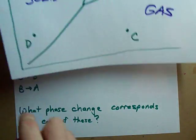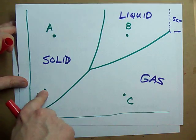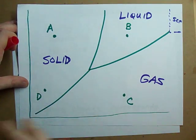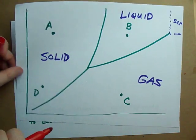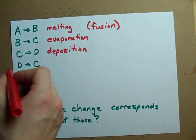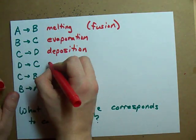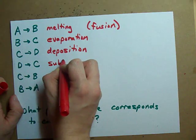D to C is when the solid turns straight into a gas with no liquid change in between. When a solid turns directly into a gas, that's called sublimation.